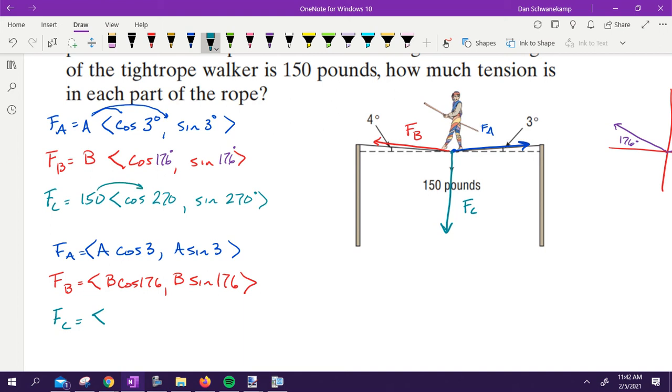Last one, C. 150 times cosine of 270. What is cosine of 270 going to get us? Zero, because cosine is the x value. At 270 you're going straight down, so that's zero. And I'm going to take 150 times sine of 270. What's sine of 270 going to get me? Negative one. So it's just negative 150.